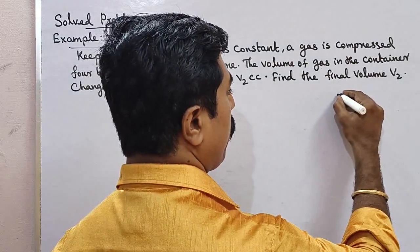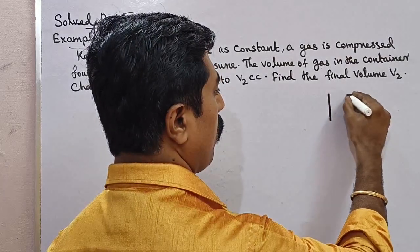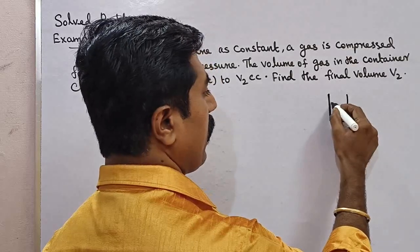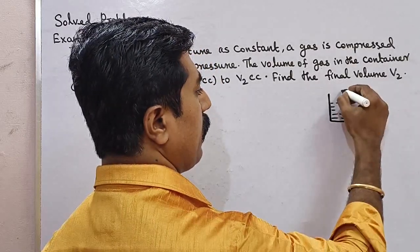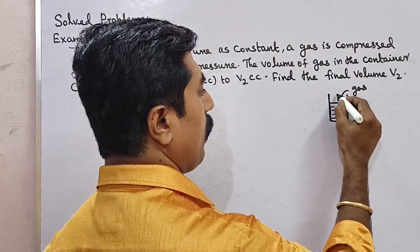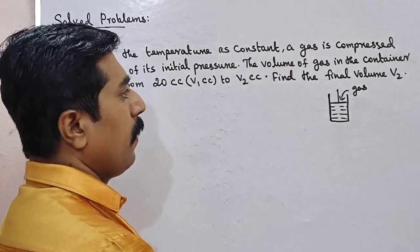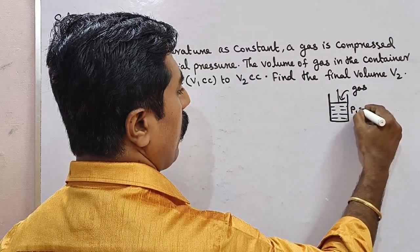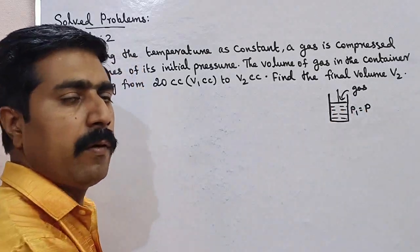Here is a container, and this is another container. We fill the gas inside. The initial pressure is P1.